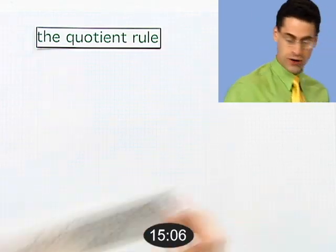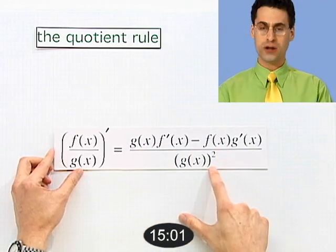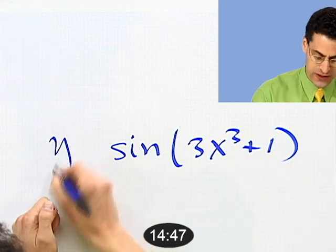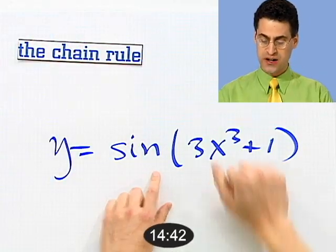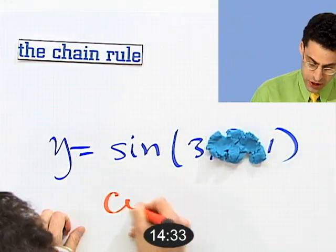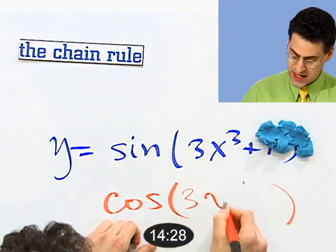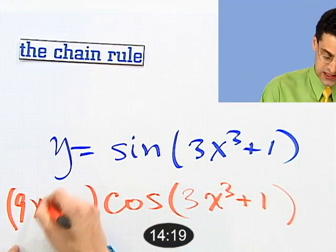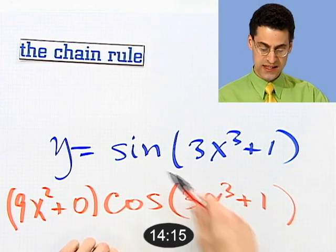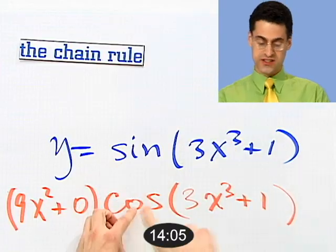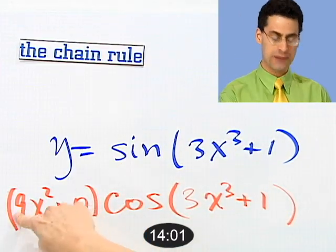For a quotient, use the quotient rule: bottom times the derivative of the top, minus the top times the derivative of the bottom, all over the bottom squared. For a complicated function with an inside — like sine of (3x³ + 1) — use the chain rule: take the derivative of the outside, keeping the inside (blop) intact, so derivative of sine(blop) is cosine(blop), then multiply by the derivative of the inside, which is 9x². Peel off like an onion — always multiply by the derivative of the inside.